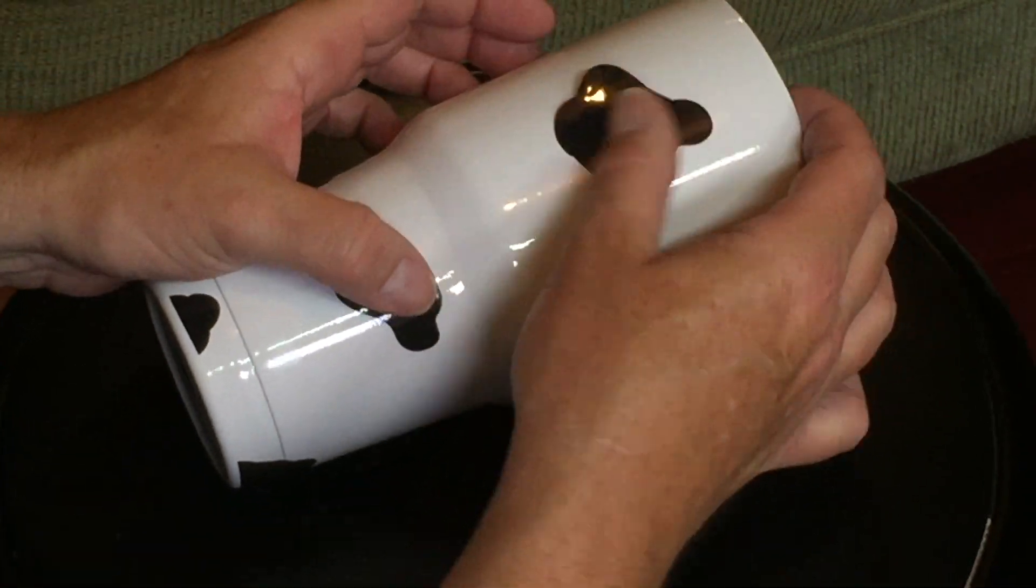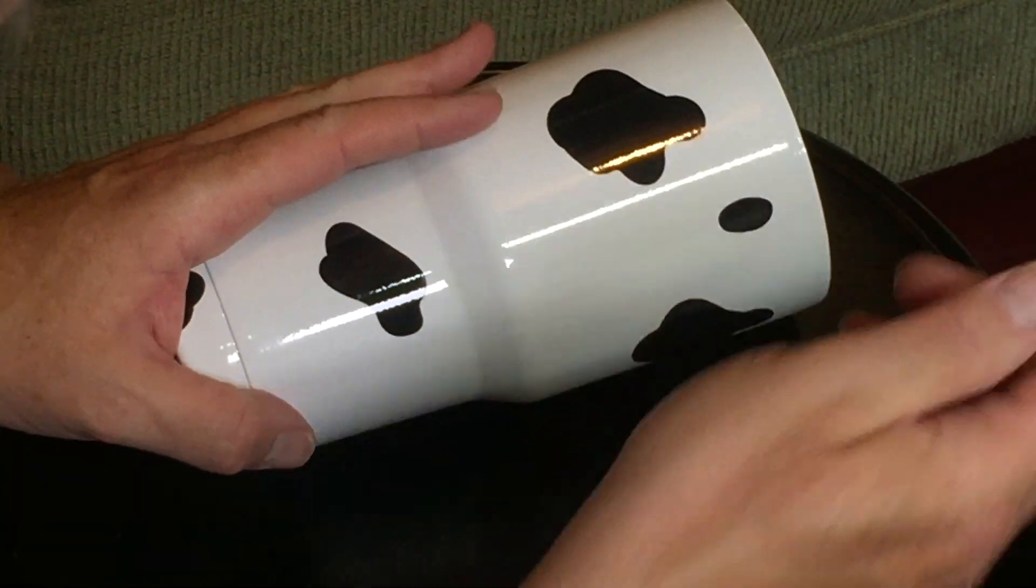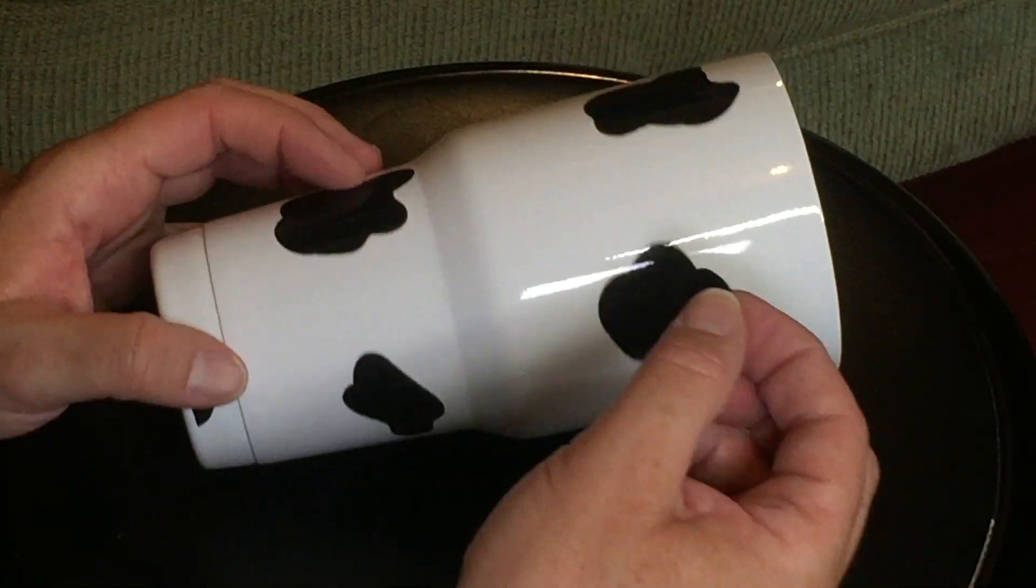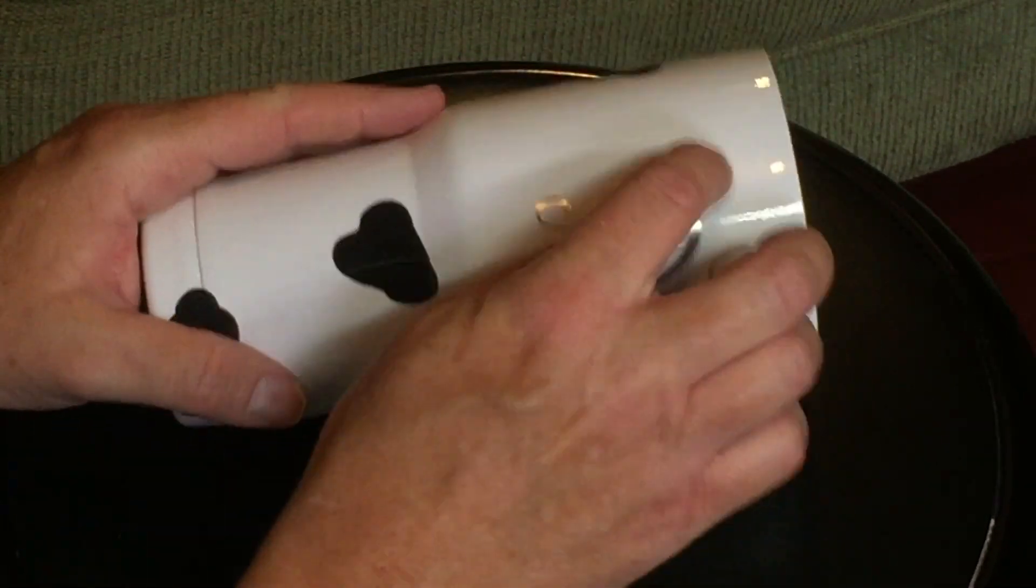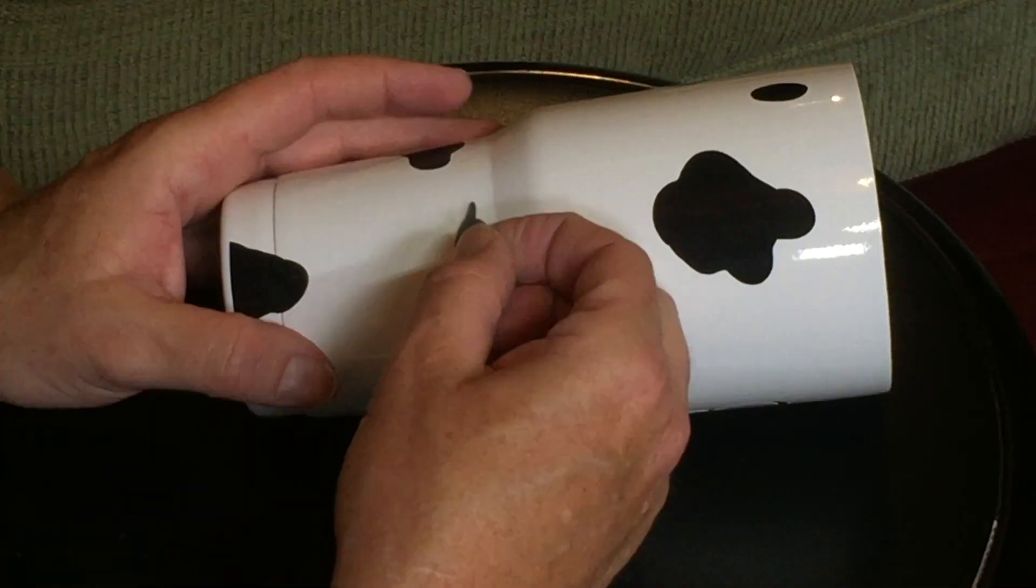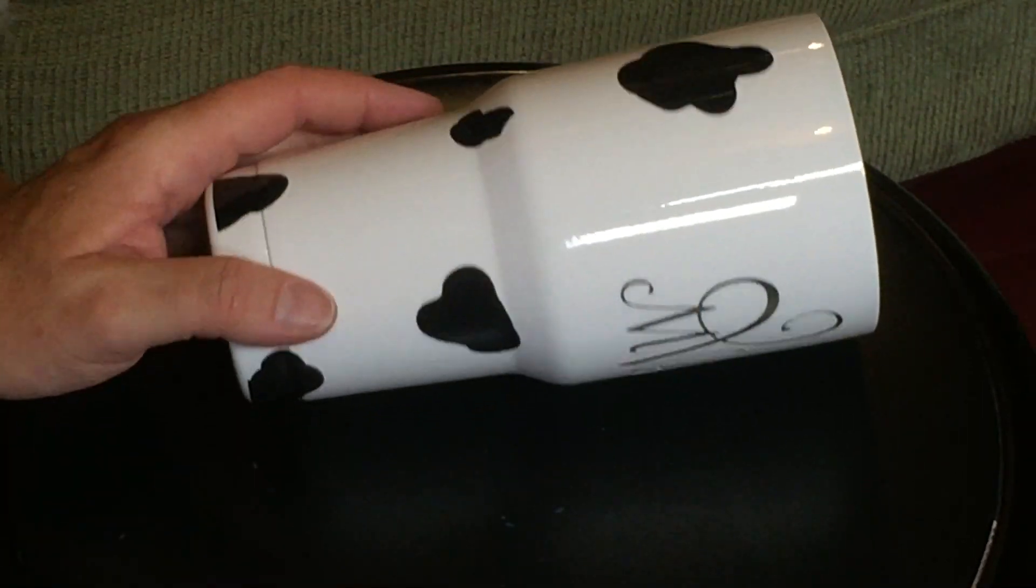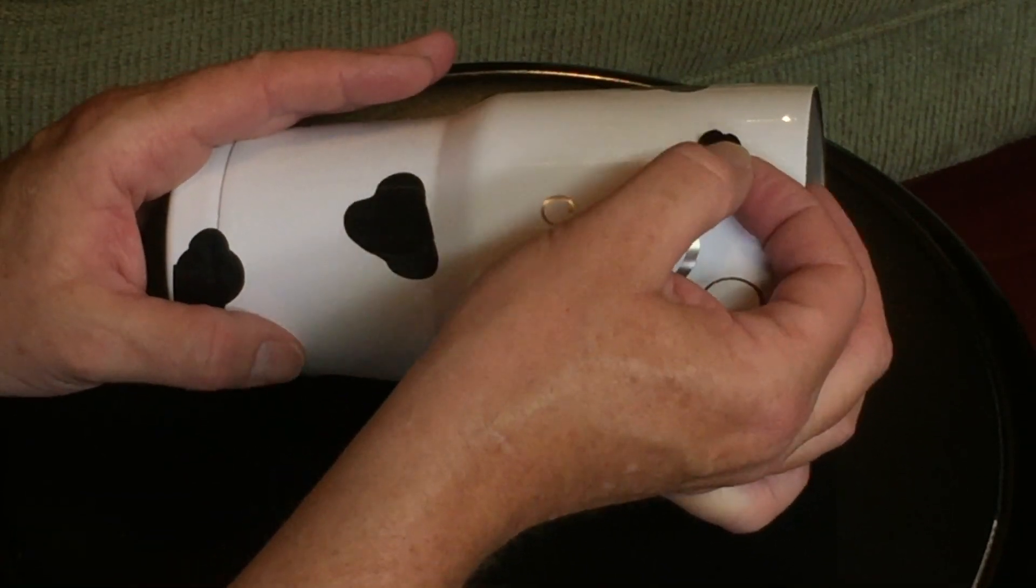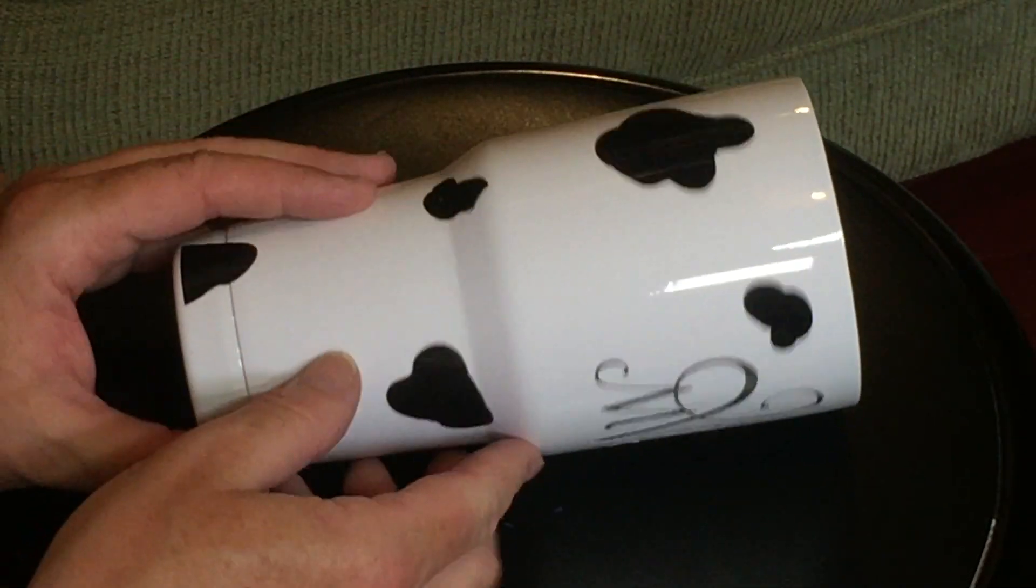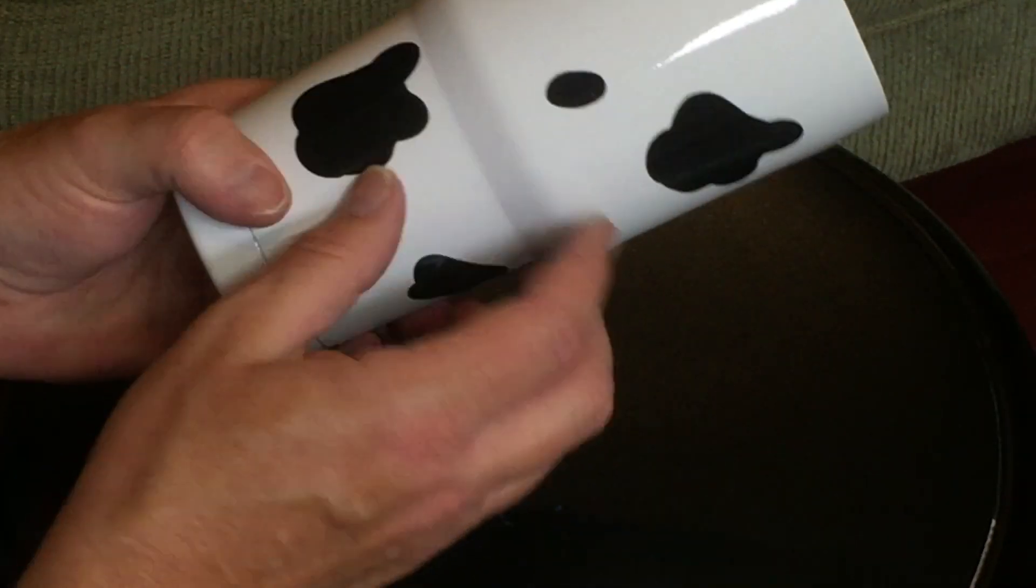We're just about done. We've got a couple more spots that we want to add vinyl. And again, this is completely random. We're noticing there's a couple of spaces that may look better if we have a little bit more vinyl in there. A couple more spots. The Holstein cow look is almost complete.